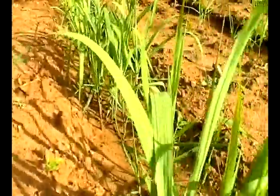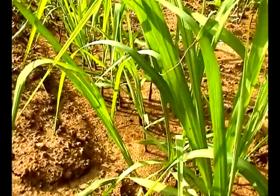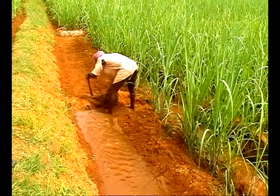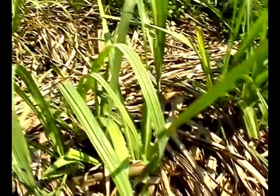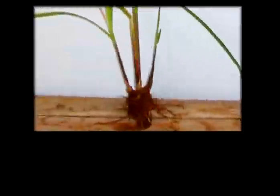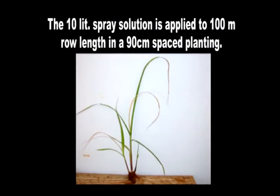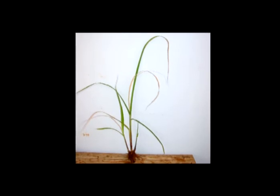Hence, in endemic locations, plant the crop before December to desynchronize the optimum crop stage with the optimum summer months. Light earthing up on 30th day, frequent irrigation, and trash mulching also reduces infestation. Apply lindane 20 EC or chlorpyrifos 20 EC when the dead hearts are 25 per 100 shoots. Mix 50 ml of the insecticide in 10 liters water and apply to the leaf walls of the shoot by high-volume knapsack or backpack sprayers. The 10 liter spray solution is applied to 100 meter row length in a 90 centimeter spaced planting. At this rate of application, 2 liters of insecticide and 400 liters of water are required.